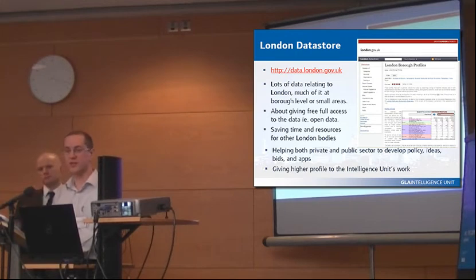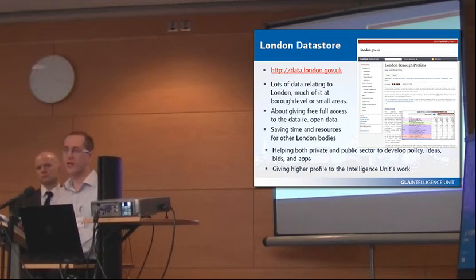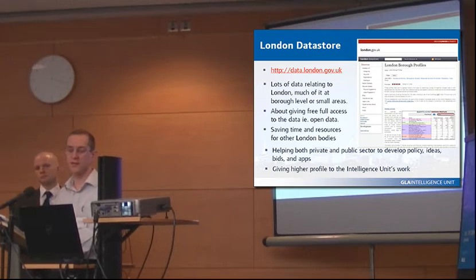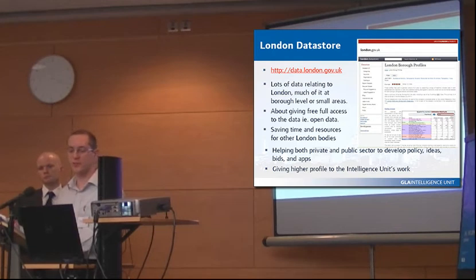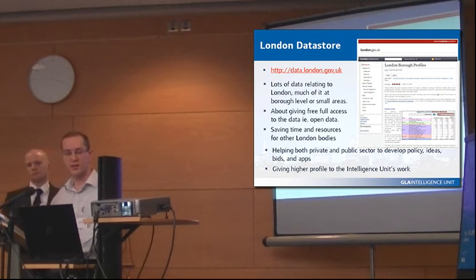There are about 500 datasets on the Datastore, so it takes a lot of keeping up to date. It's all about giving free and full access to the data — we're very much into open data. Any data that appears in reports but isn't on the Datastore tends to be heavily licensed, so we can't put it there. We might be able to put percentages into the InstantAtlas reports, but not be able to provide the full dataset in spreadsheets — that's purely for licensing reasons. Where possible, we make it full access in Excel spreadsheets as well as the InstantAtlas reports.